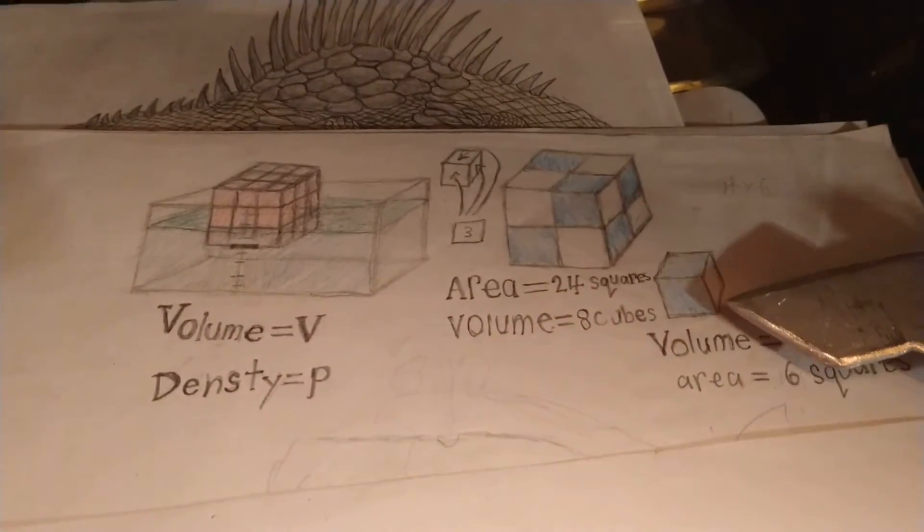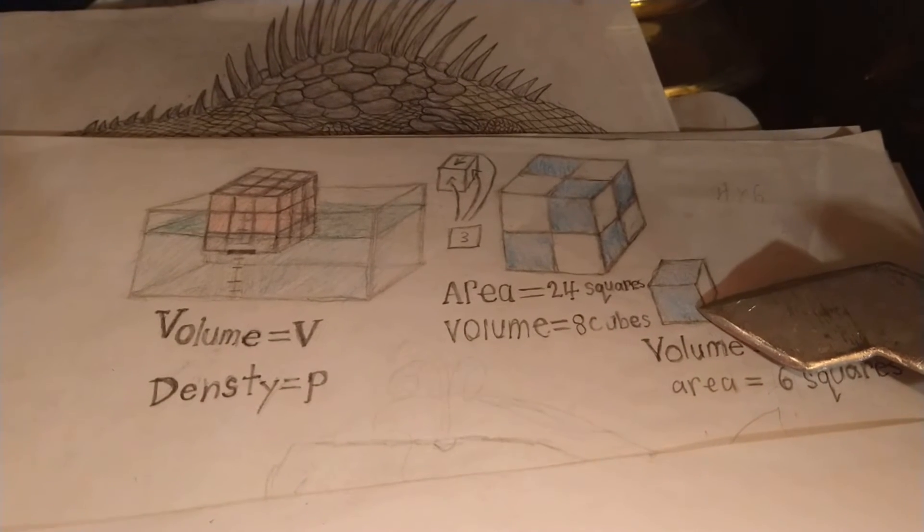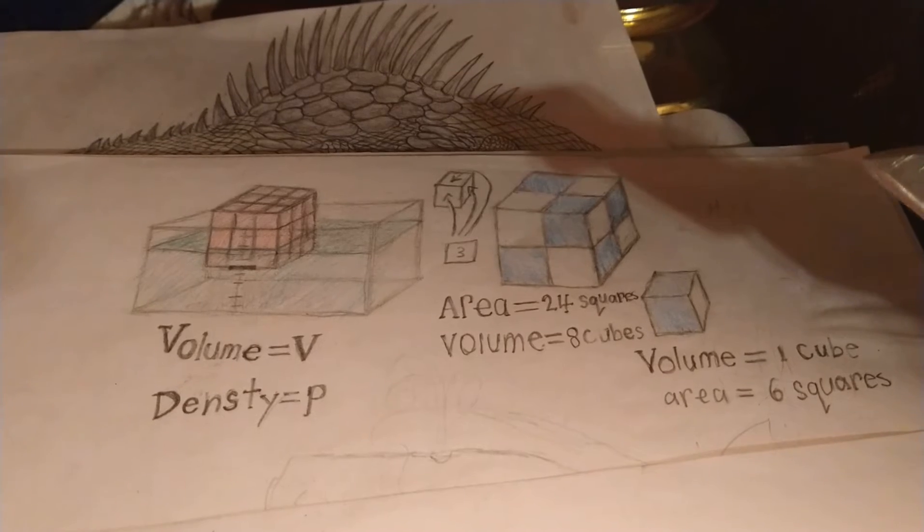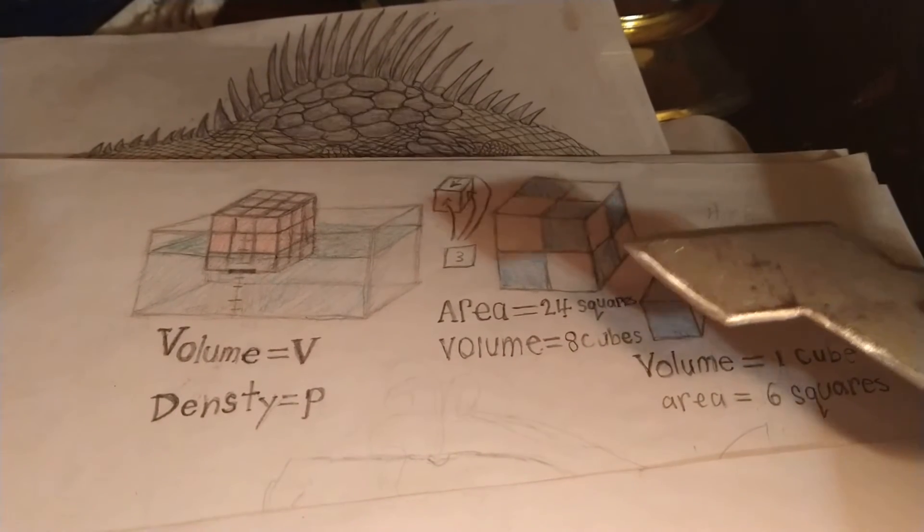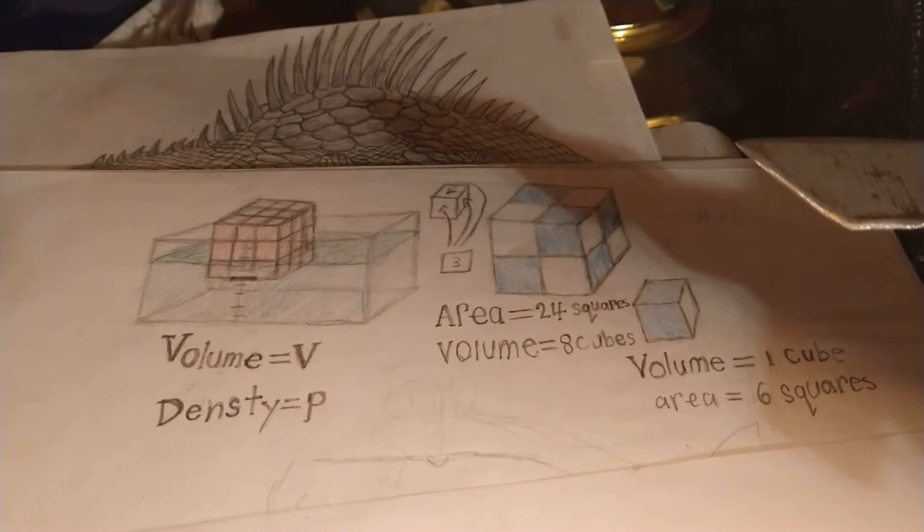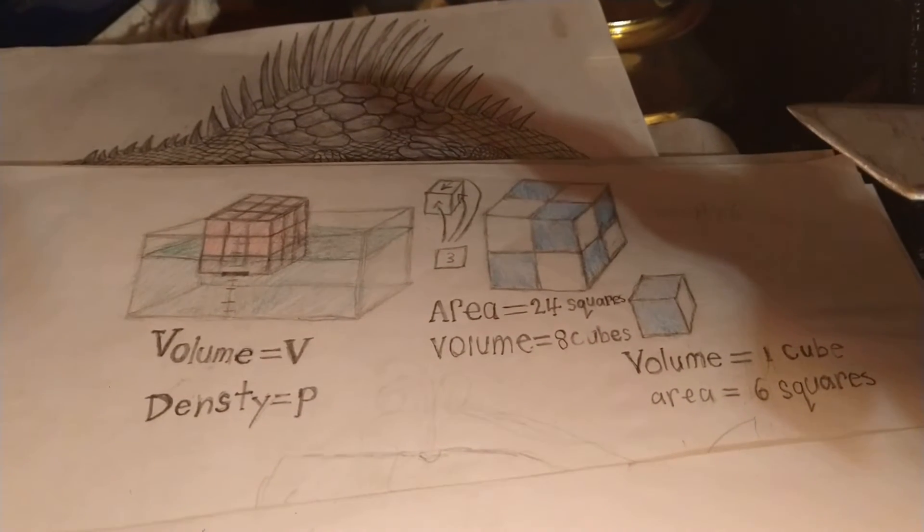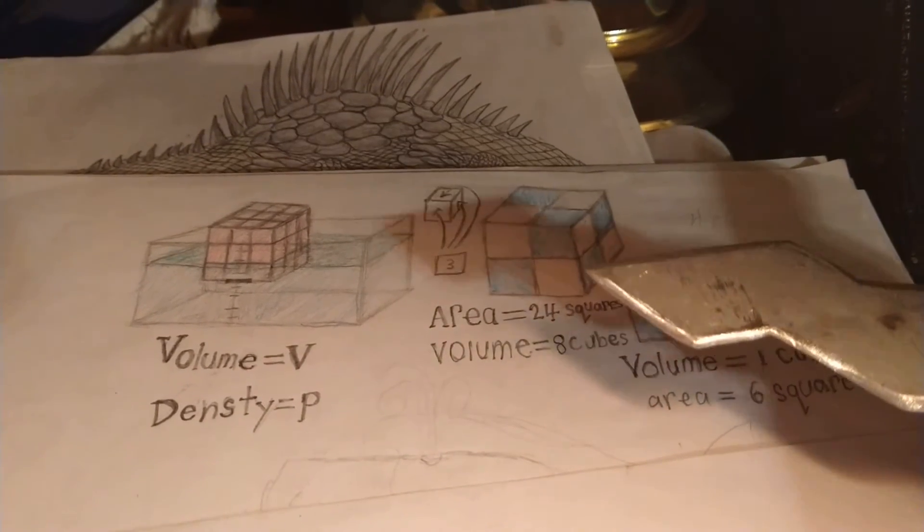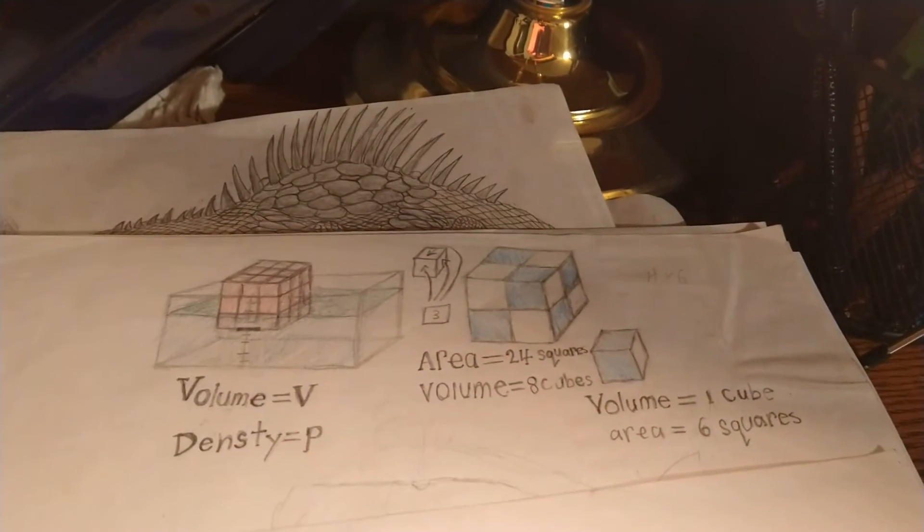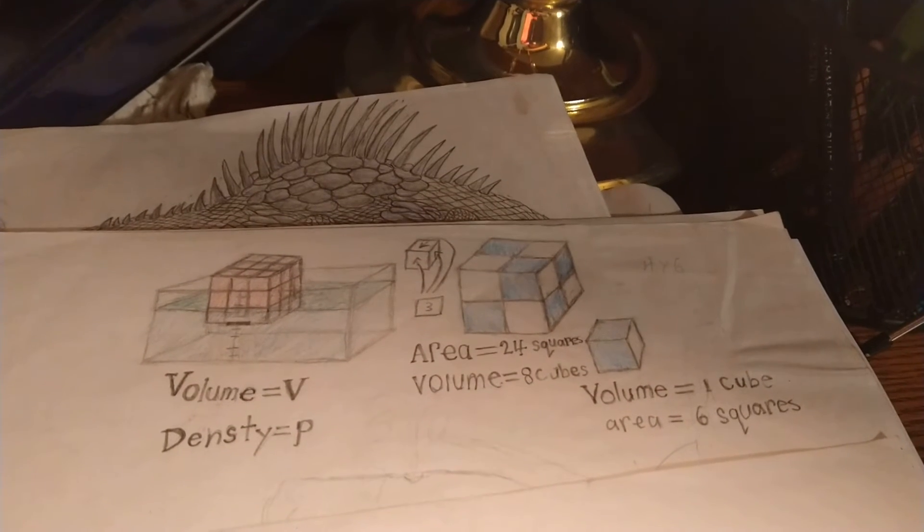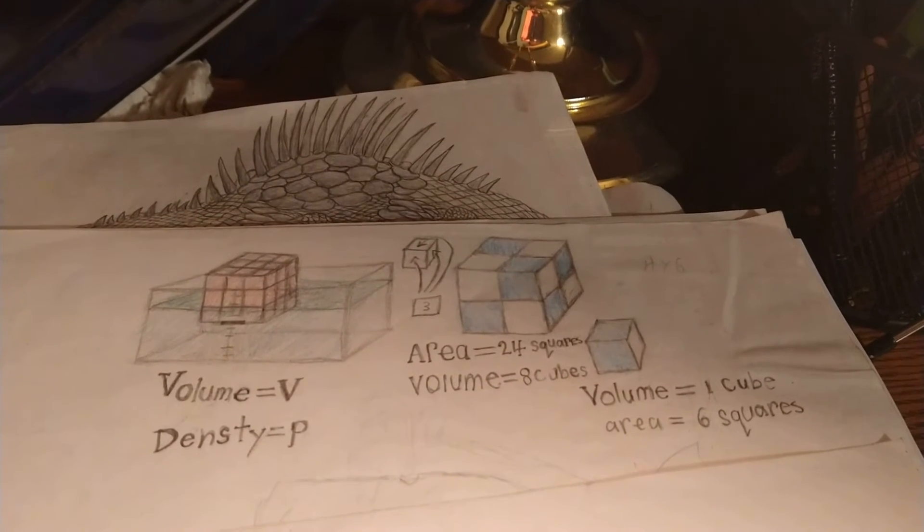You can see here that one cube, if scaled up to be twice as tall, would contain the area of eight cubes. This would mean eight times the volume, eight times the weight, but only four times the surface area.